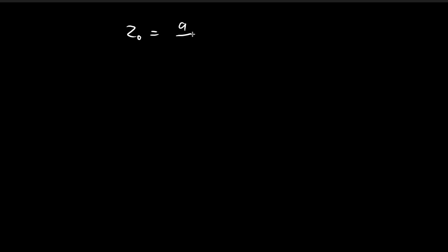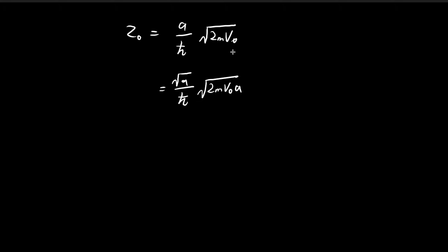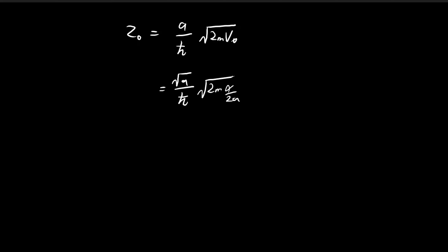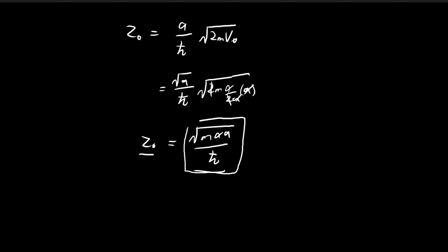Recall that Z0 is defined as (A / h-bar) times sqrt(2M·V0). Pulling A inside the square root gives sqrt(2M·V0·A²). Substituting V0 = alpha / 2A, the A's cancel, giving Z0 = sqrt(M·alpha·A) / h-bar. So Z0 depends on A, and as A tends towards 0, Z0 also tends towards 0.